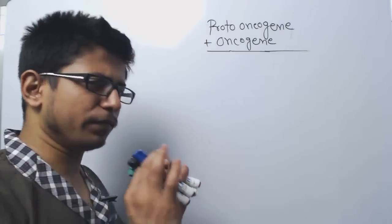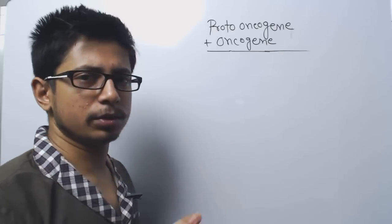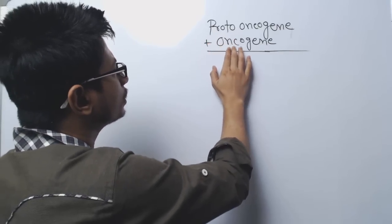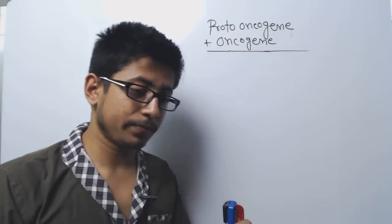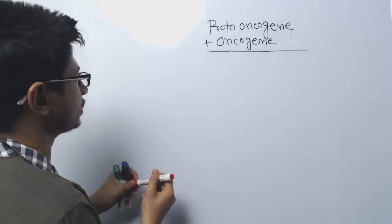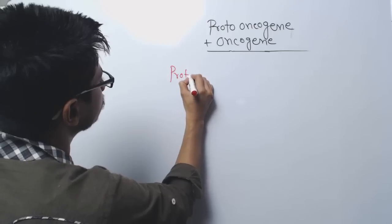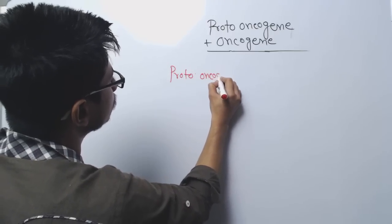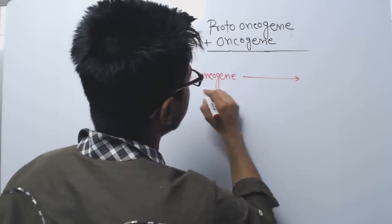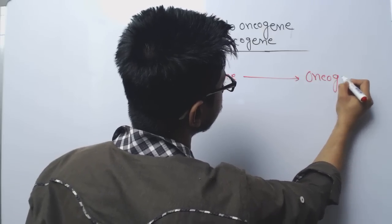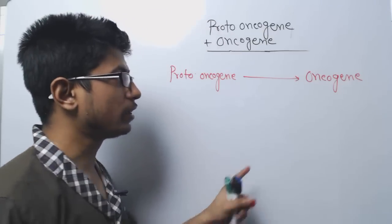The most important idea you need to understand at the very beginning is that oncogenes are all those genes which were earlier proto-oncogenes. That means proto-oncogenes are a type of gene that, when mutated, may develop into oncogenes. So they are not different things — proto-oncogenes can turn into oncogenes due to several different modifications.